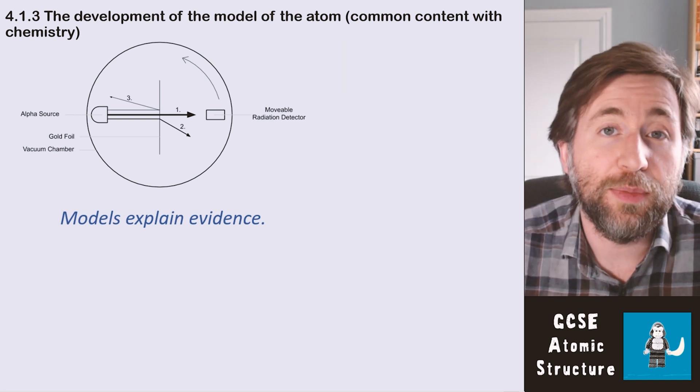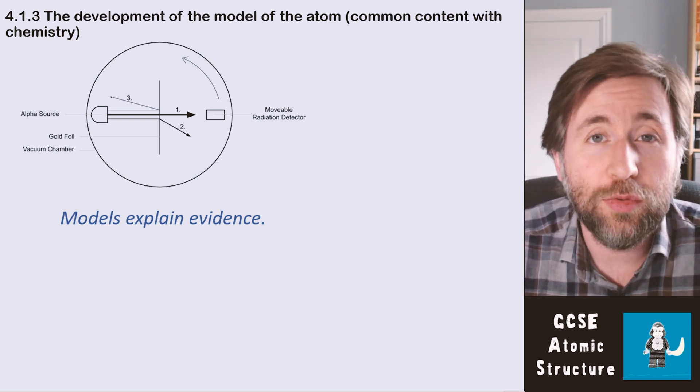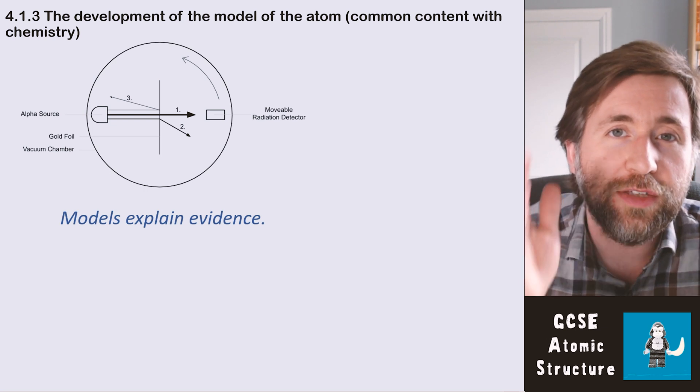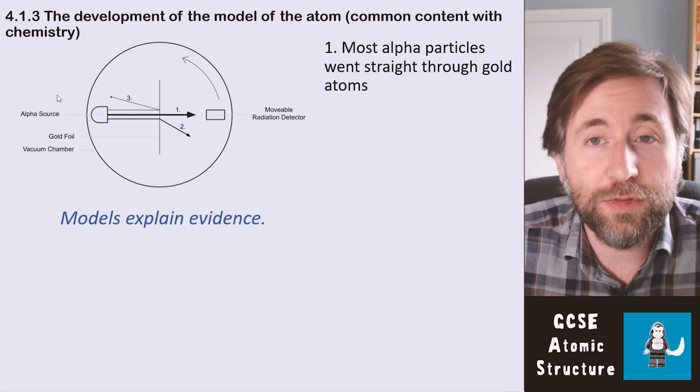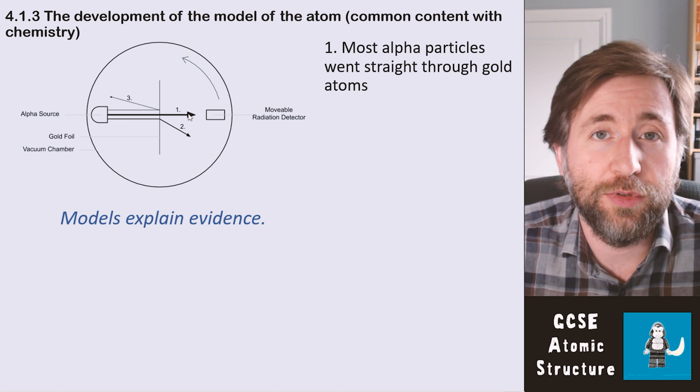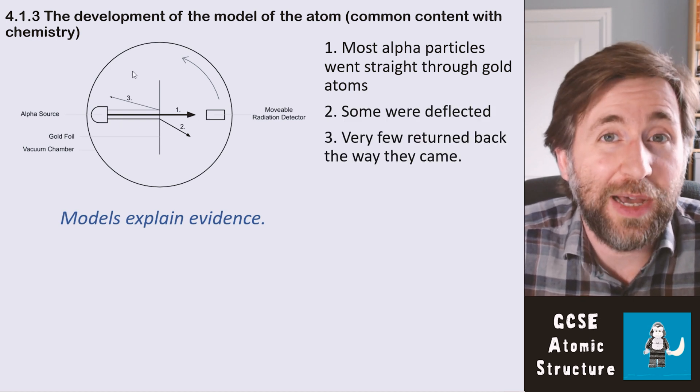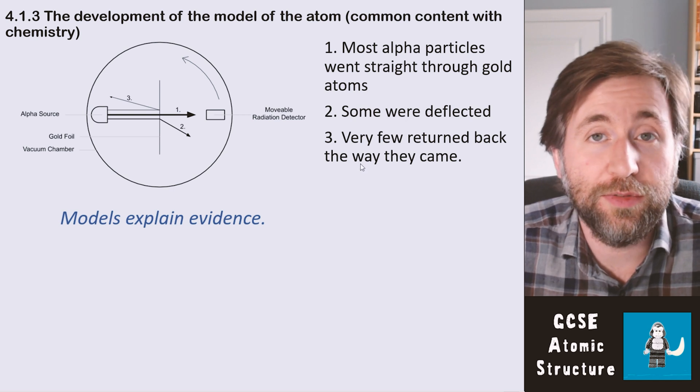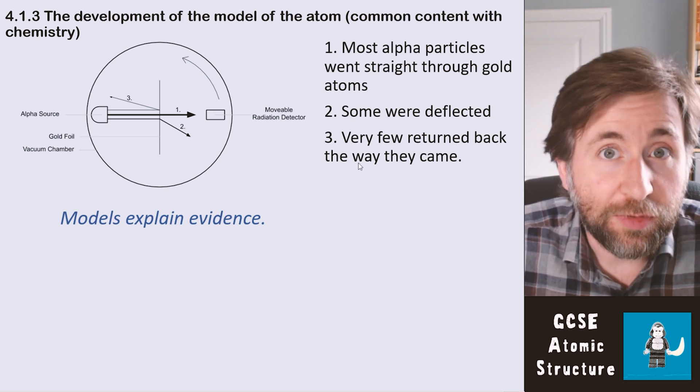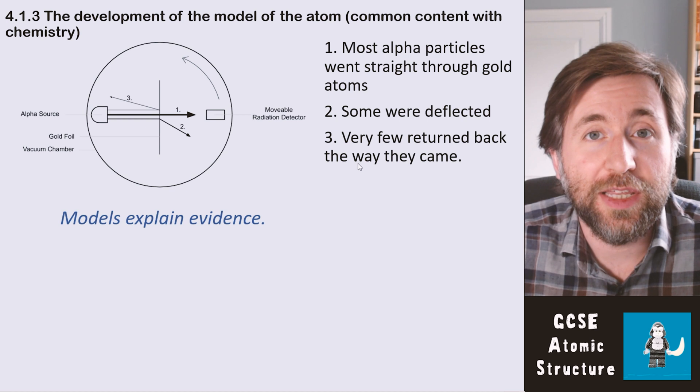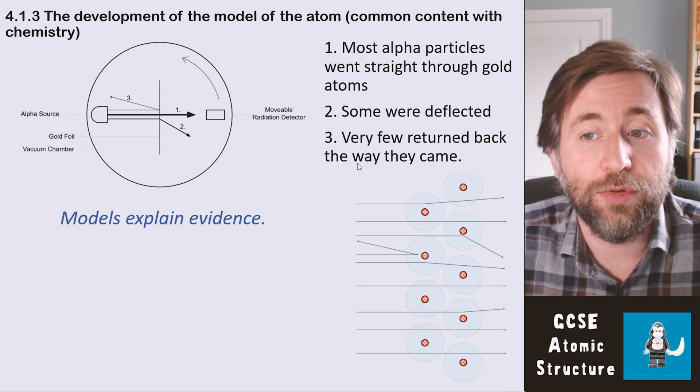This was incredible to him. If the plum pudding model was correct, then all of those alpha particles should have gone straight through the gold foil. Most of them did—most alpha particles went straight through, that's path one. Some were deflected and very few actually came back the way they came. That's an important thing that he noticed—some of them did go back the way they came, so they had to change the model.